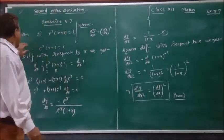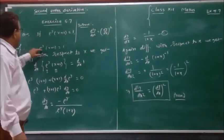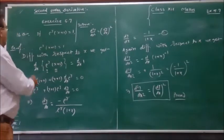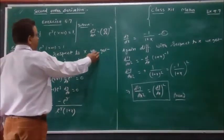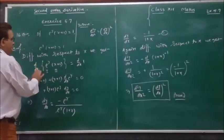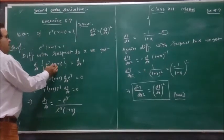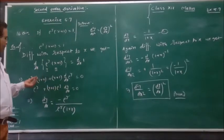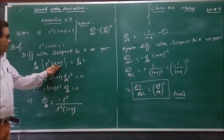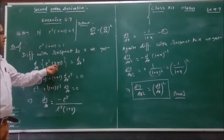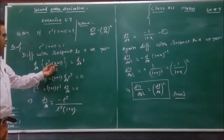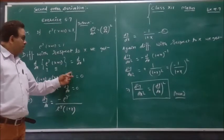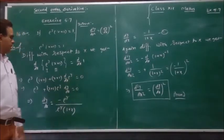So to prove this, e raised to y times x plus 1 equals 1. Now differentiating with respect to x, we get the first function times differentiation of the second function, plus the second function times differentiation of the first. After simplification, this gives e raised to y equal to 1 plus 0.